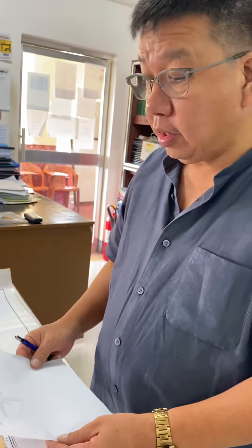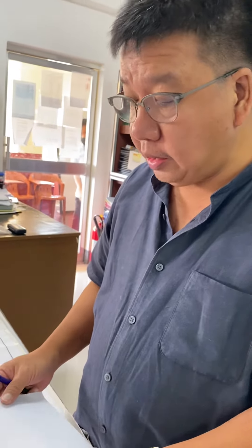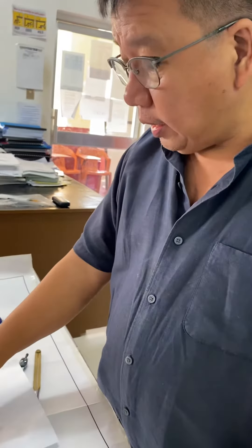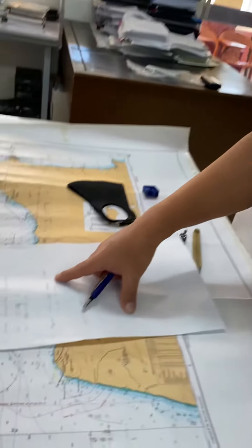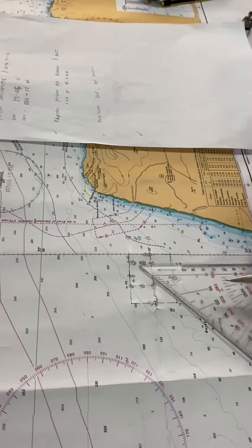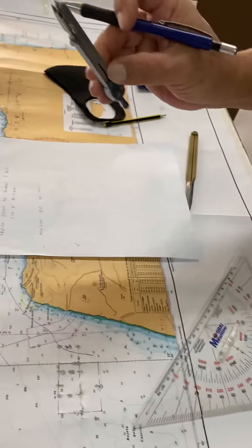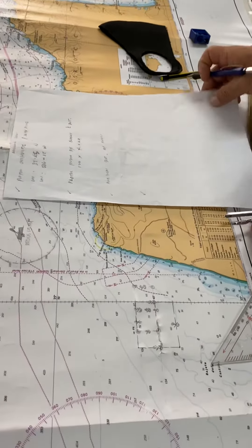For this session we will demonstrate plotting bearing and distance on the Mercator chart. We will use our two triangles and compass divider.